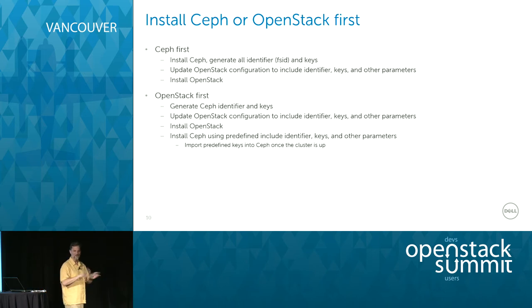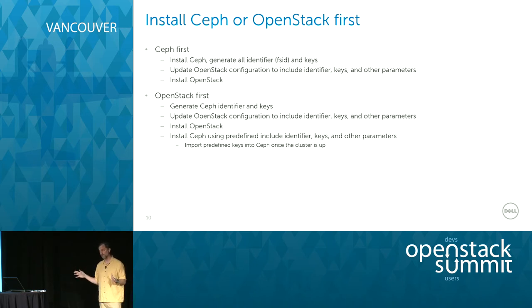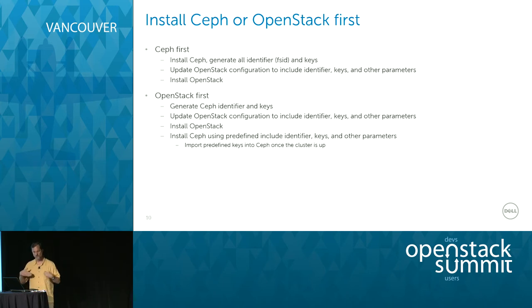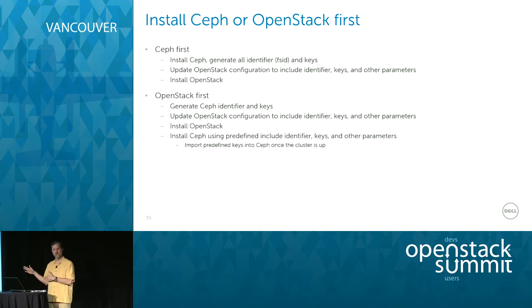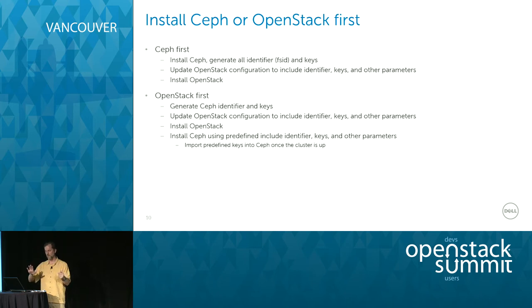There are a couple of ways to go about installation. The easiest is to install Ceph first. Alternatively, you can install OpenStack first and then Ceph — which is what we're doing — and it's not as complicated as it sounds. When you install Ceph first, it generates its FSID, you generate all the keys, all the users, and add them. Or you can generate those without the cluster existing yet and install Ceph later. We'll install OpenStack, set up Ceph, install the clients, and then install the servers.